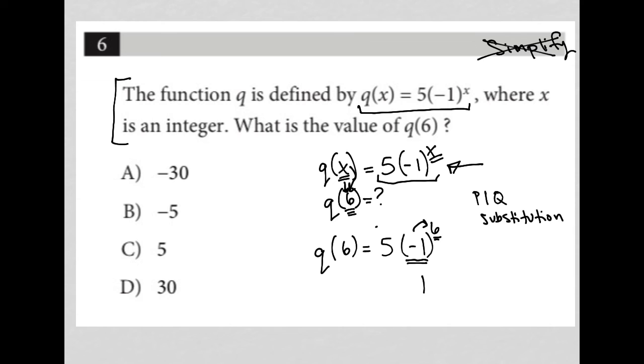So that takes care of that. I still, of course, have this five out here. And five times one is equal to five. So the answer to this question is choice C, and the strategy that we use is plug in information from the question.